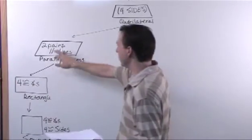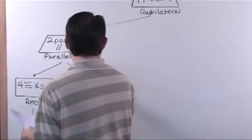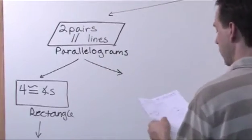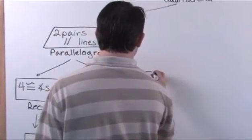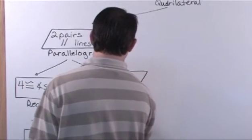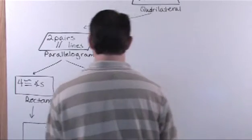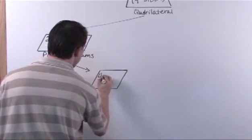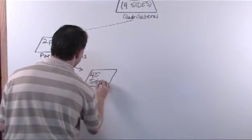Now backing up the truck here, up to parallelograms. Splitting off here, you have another family called a rhombus. So here you have these guys here. This is a rhombus. And so you have four congruent sides.